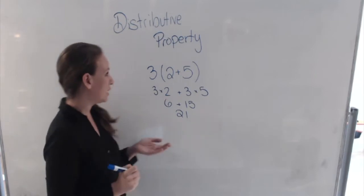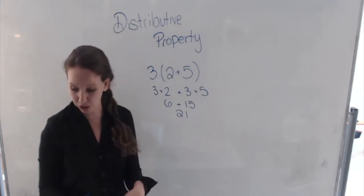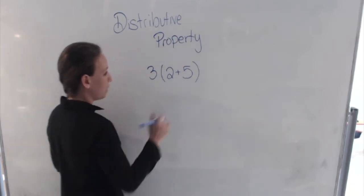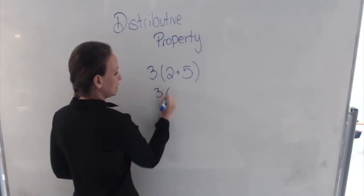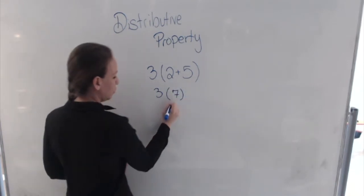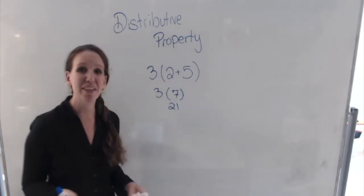Another way we can think about this is using our order of operations, and we can add what's inside our parentheses first. So that's the same thing as saying 3 times 7, which we know is 21. Do you see how we got the same answer?